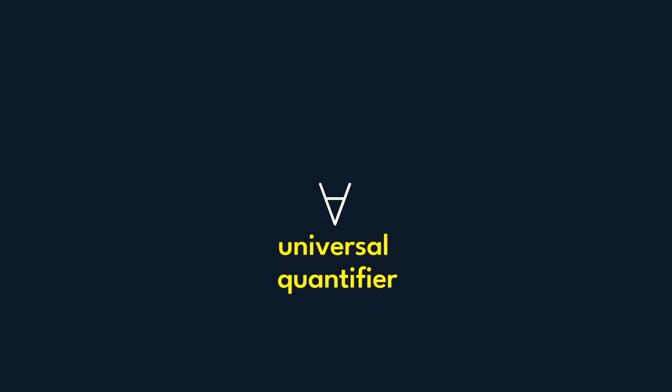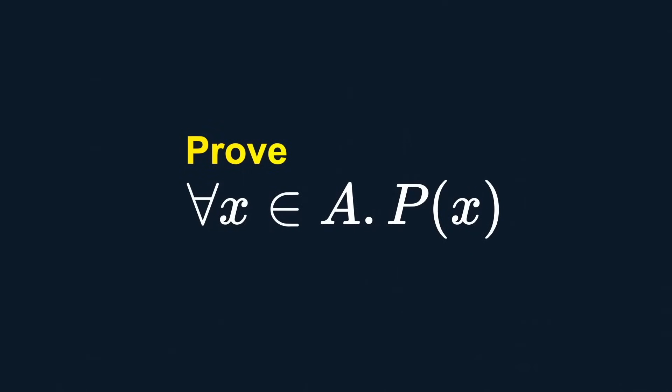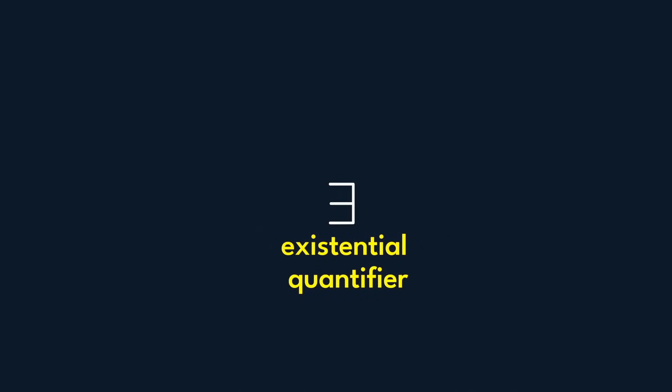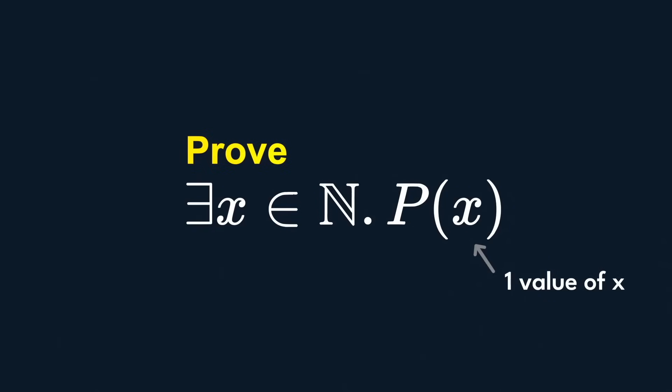To prove the universal quantifier, for example, for all x in set A such that P(x), we let x be any arbitrary member of A in the proof. Then, prove P(x). The existential quantifier is more straightforward as you just need to prove one value of x that is true. So choose the value v which you think makes P(v) true, prove it, and then you're done.